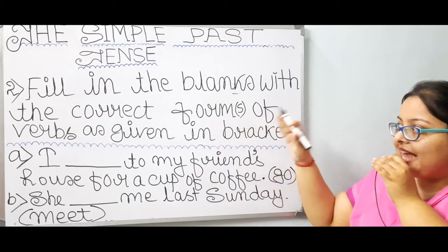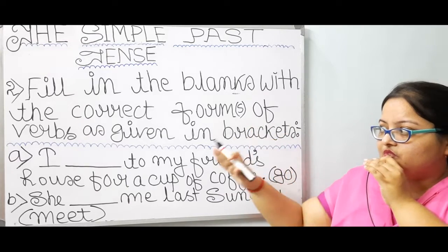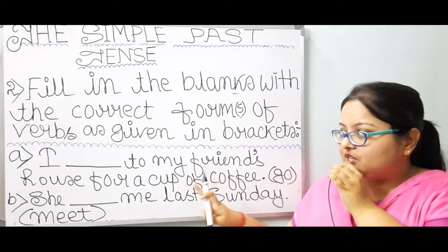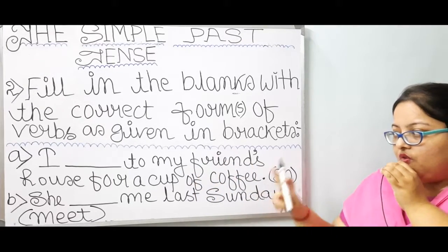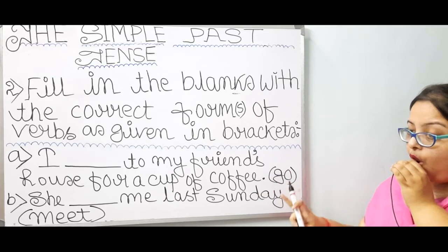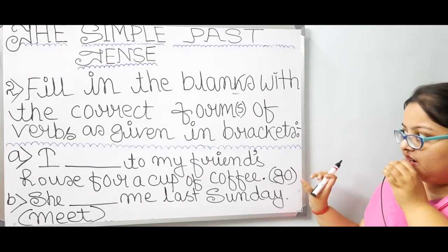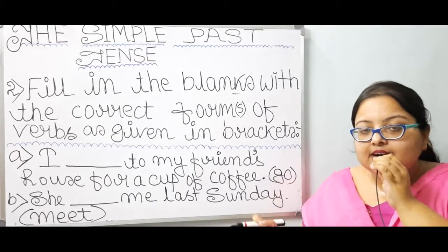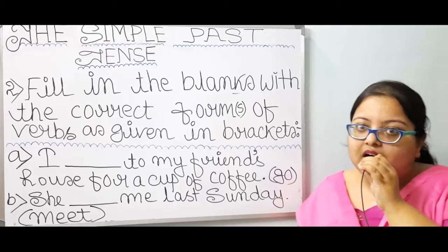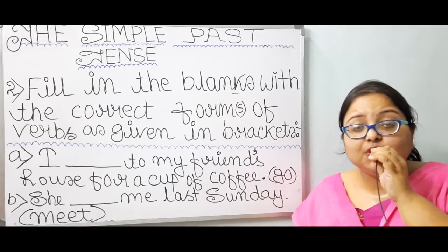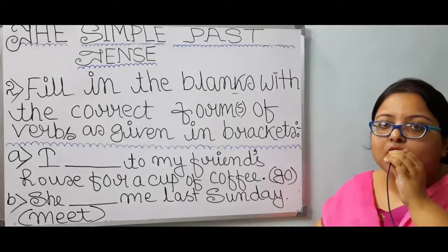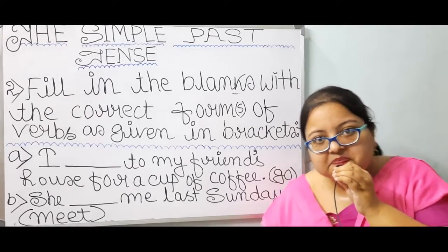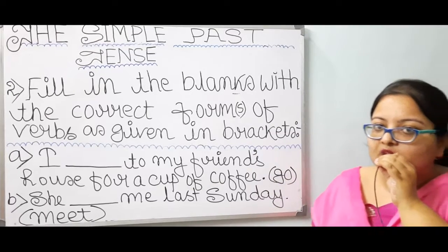Number 2. Fill in the blanks with the correct form or forms of verbs as given in brackets. Number A: I dash to my friend's house for a cup of coffee. The verb given is 'go'. According to the rule, after the subject, I have to put the second form of the verb. Go is the first form or present form of the verb.